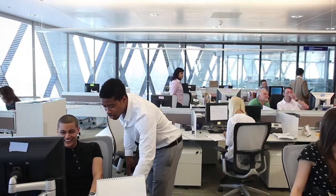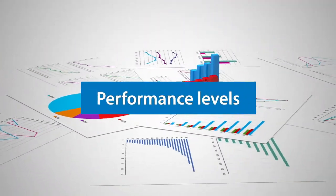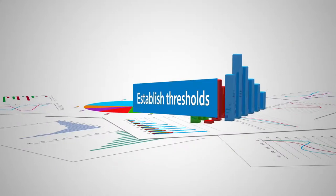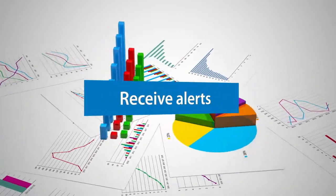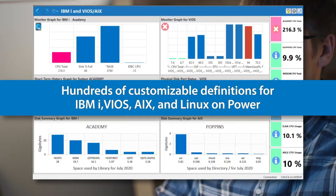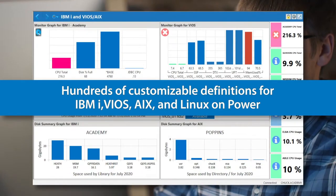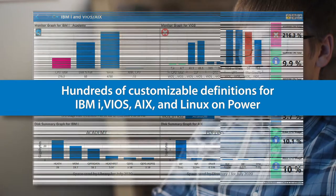Automated monitoring tools can help you identify ideal performance levels, establish thresholds, and receive alerts when abnormal conditions exist, so you can quickly resolve issues to minimize the impact. Robot Monitor is the most comprehensive automated monitoring solution available for IBM Power Systems environments.